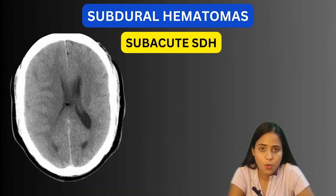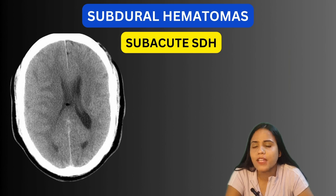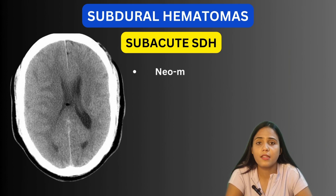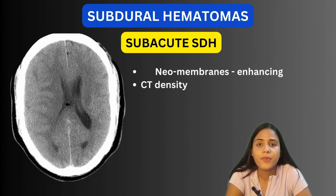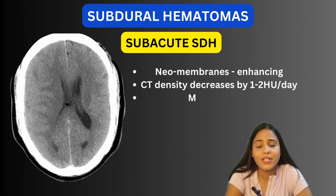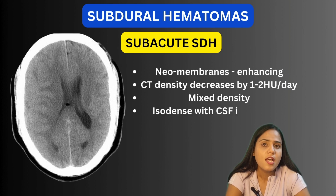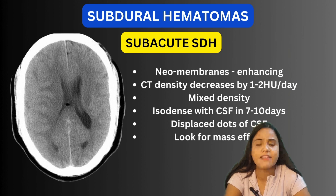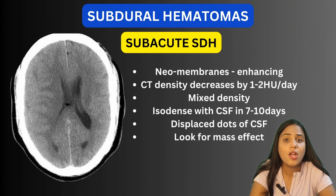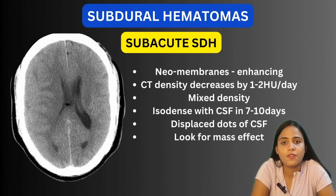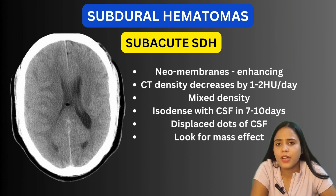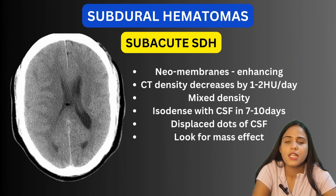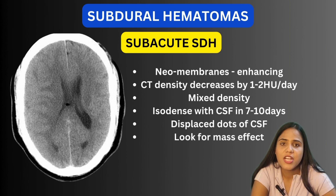Subacute SDHs are usually several days to several weeks old, containing partially liquefying clots and resolving blood products. They become surrounded by a membrane of organizing granulation tissue known as the neomembrane, which is two-layered: the outer thicker layer adheres to the dura, and the inner delicate layer overlies the arachnoid. These membranes may enhance, especially the superficial thicker layer. The density decreases at 1–2 Hounsfield units per day, and by 7–10 days they may become isodense. To detect isodense SDHs, look for mass effects like medial shift of the cortex or ventricles — for example, right frontoparietal isodensity compressing the right cerebral hemisphere, effacing gyri and sulci, causing midline shift and compression of the right lateral ventricle.